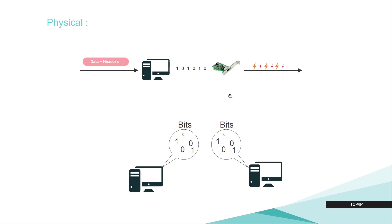After that, the data is forwarded to the physical layer. The physical layer includes information about the cable, the physical cables being used, and the NIC — the network interface card. In that layer, the computer doesn't understand anything but bits. Our data arrives at the physical layer, which transforms it to bits — zeros and ones — and then forwards it to the cable. The most famous cable is the Ethernet cable, the copper Ethernet cable. If we are using an Ethernet cable, the data is sent as an electronic signal.